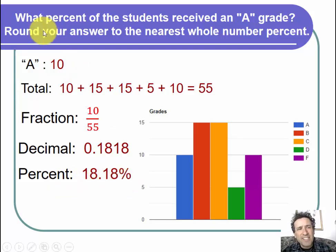But the instructions say we're supposed to round your answer to the nearest whole number percent. So the whole number percent, we notice that the whole number digit is an 8, and to the right of the 8 is a 1. 1 is less than 5, so that means we leave the 8 alone and we round down. And our final answer is we can say that 18% of all students received an A grade.